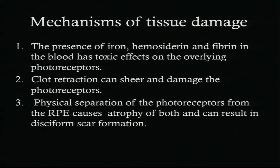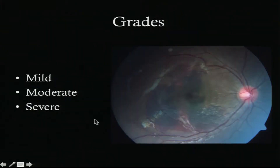The main reasons we need to remove the blood are that iron, hemosiderin, and fibrin in the blood can be toxic — as early as 24 hours you can have problems. Clot retraction can shear and damage photoreceptors, and the presence of blood mechanically separates and acts as a barrier for nutrients, ultimately leading to a disciform scar.